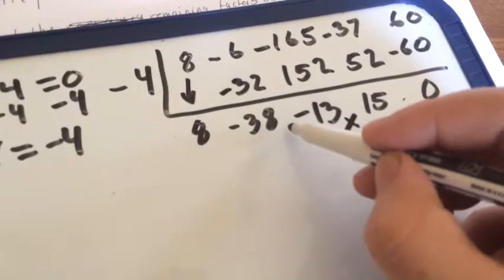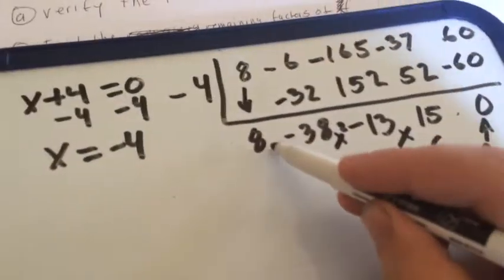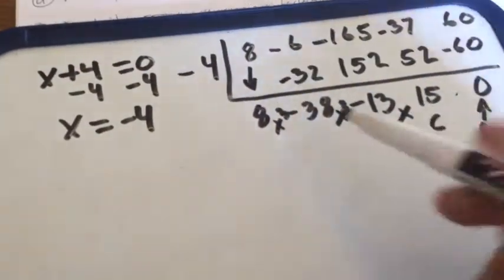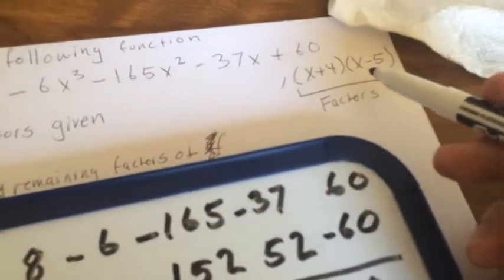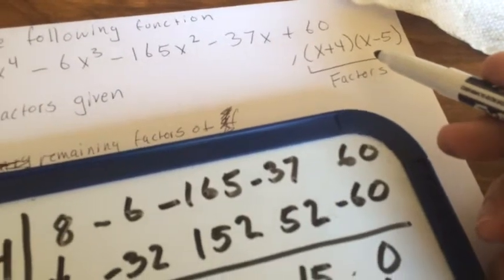This is your constant, this is your x term, this is your x squared term, and this is your x cubed term. I can just take that and divide using synthetic division to confirm it as well.